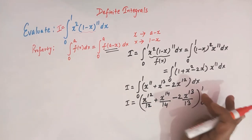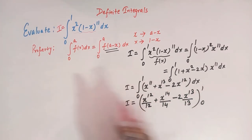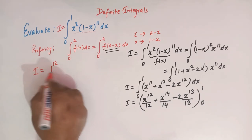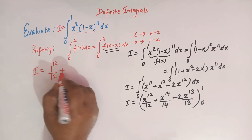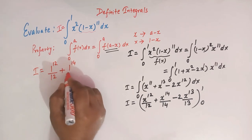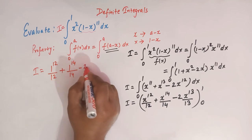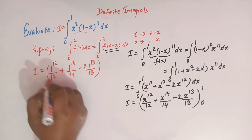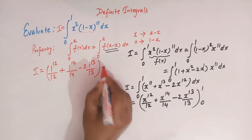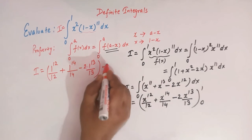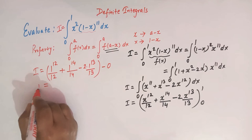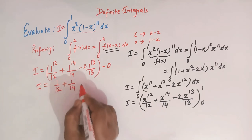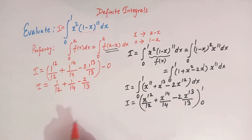Substituting the limits, we get I equals 1 raised to 12 over 12, plus 1 raised to 14 over 14, minus 2 times 1 raised to 13 over 13. When we substitute 0, the entire term is 0. So I equals 1 over 12 plus 1 over 14 minus 2 over 13.